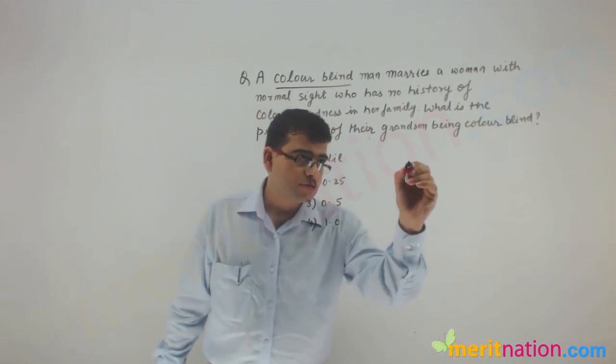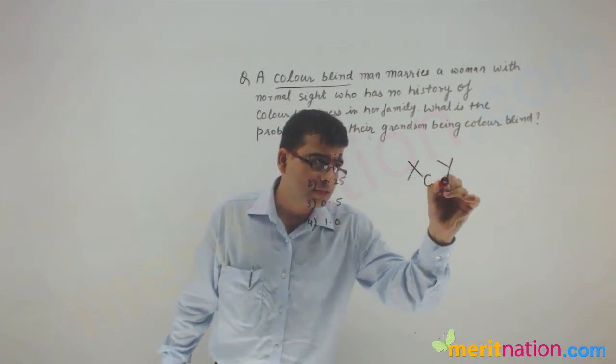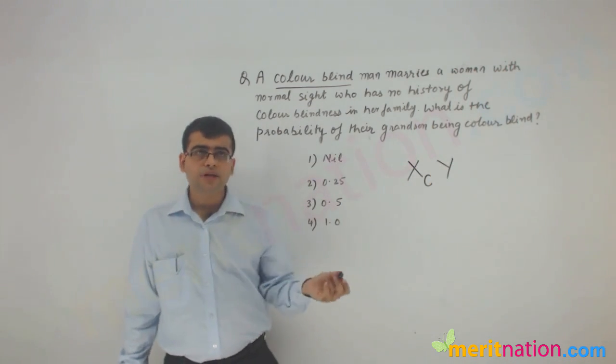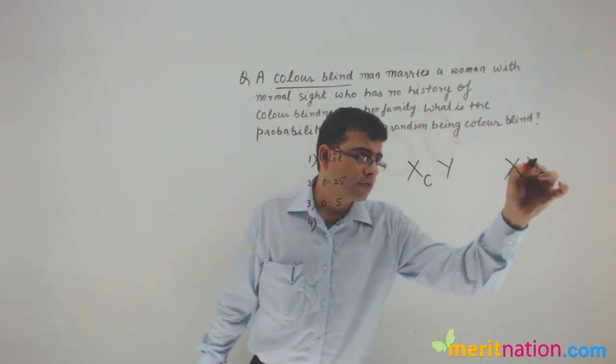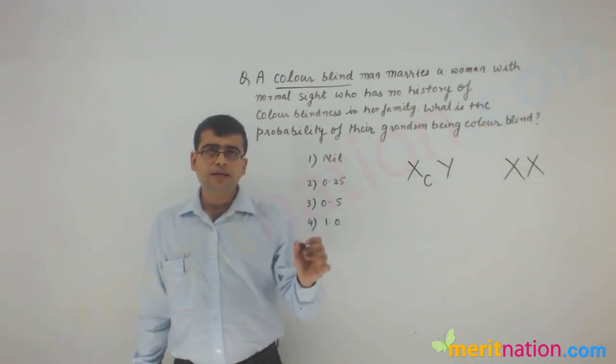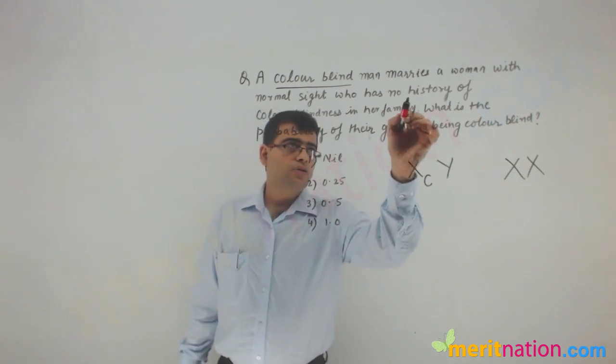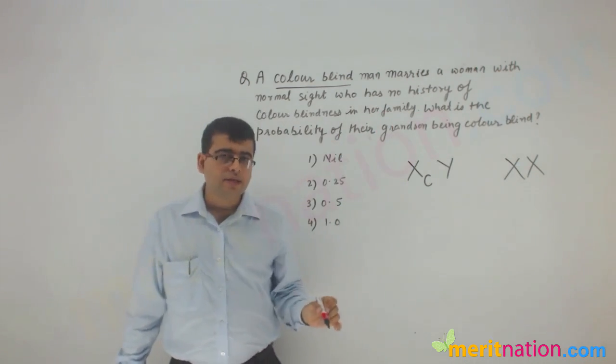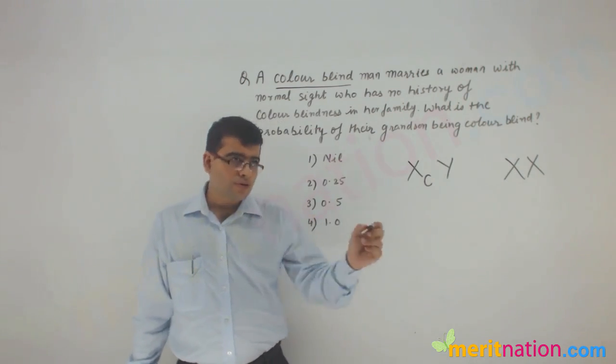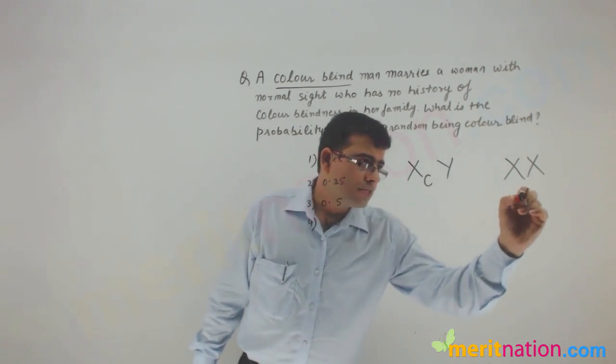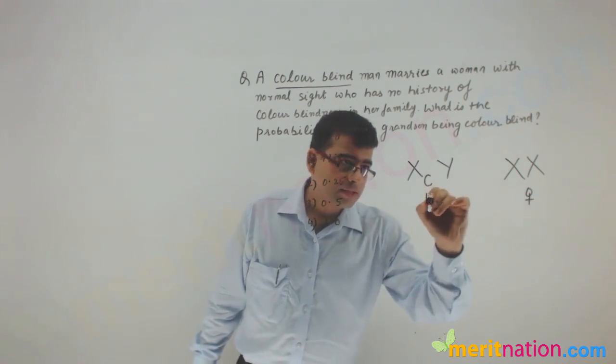So a colorblind man, the colorblind man is this, marries a woman with normal sight. Because here it writes that it has no history of colorblindness, that means the woman cannot be a carrier in this case. So this is the cross. This is the woman, and this is the man.